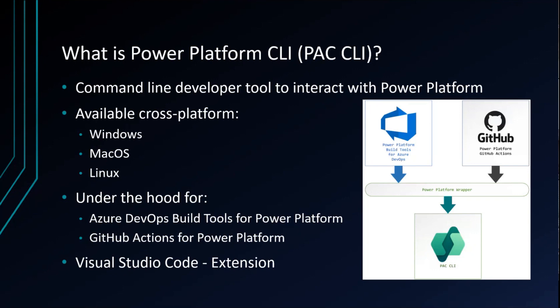Power Platform CLI is a developer tool to interact with Power Platform — for environments, solutions, portals, virtual agents. You can also utilize Copilot capabilities we are introducing in the CLI as a preview. It is available cross-platform as a standalone install for Windows, Mac OS, and Linux. Under the hood, if you're using Azure DevOps or GitHub Actions, you can use it through GitHub Actions for Power Platform as well as the Azure DevOps Build Tools.